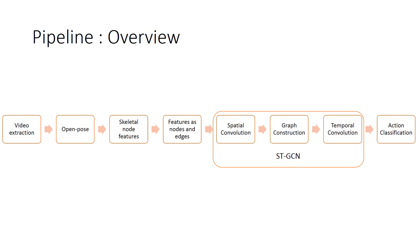The features of the nodes and edges are then fed into a spatial temporal graph convolution network. At the end, a softmax classifier is used to classify the action.